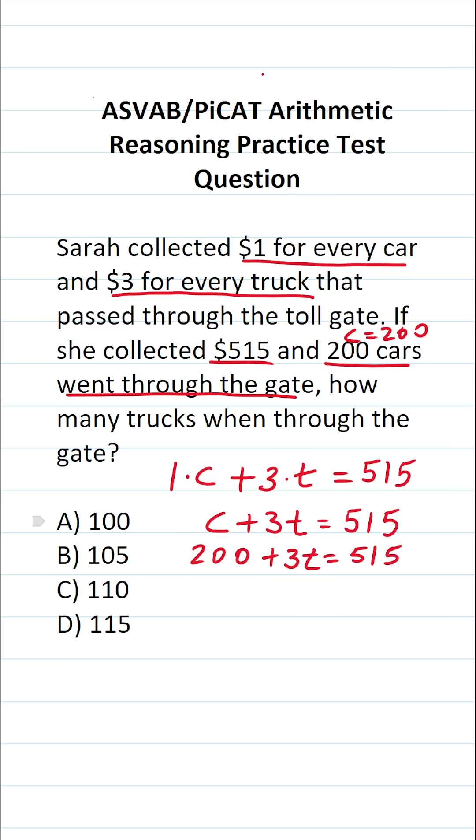Clearly, in order to determine how many trucks went through the gate, all we have to do is solve this equation for T now. To get started, I'm going to subtract 200 from both sides of the equation. This crosses out, leaving us with 3T over here. Let's work this out. 5 minus 0 is 5, 1 minus 0 is 1, 5 minus 2 is 3. So this says 3T equals 315.